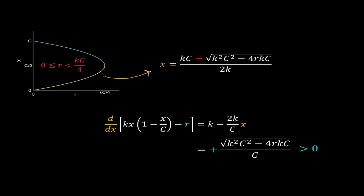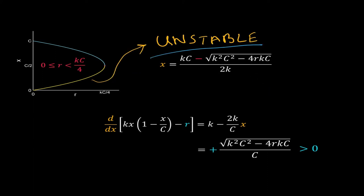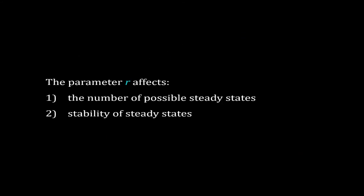We will use the same procedure for the other steady state along the yellow line. For this one, x equals (kc minus the square root of k²c² minus 4rkc) divided by 2k. The derivative of the function in our ODE is positive for this steady state, so it is unstable. Therefore, parameter r affects both the number of possible steady states and the stability of these steady states. This phenomenon is called bifurcation.